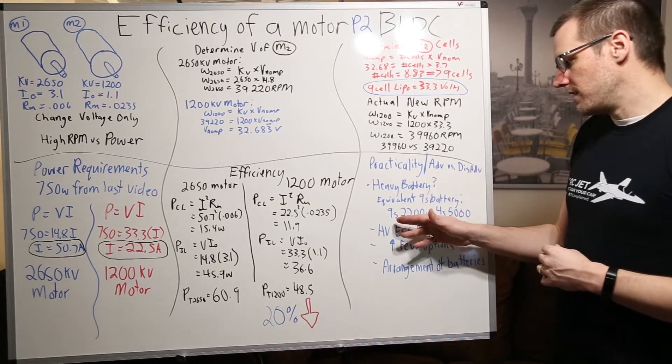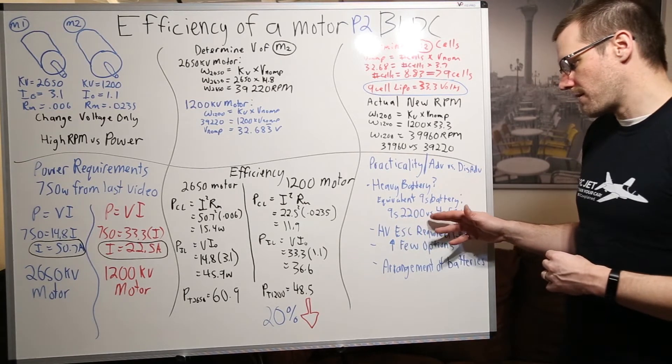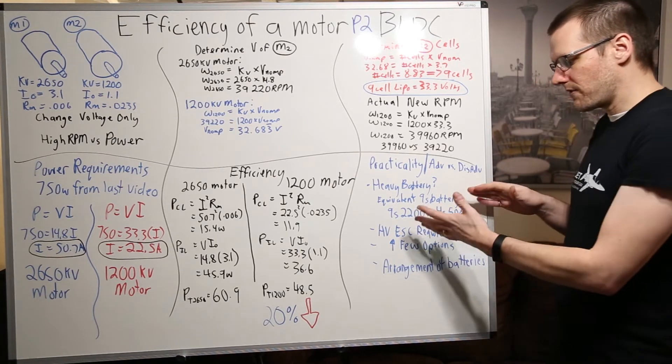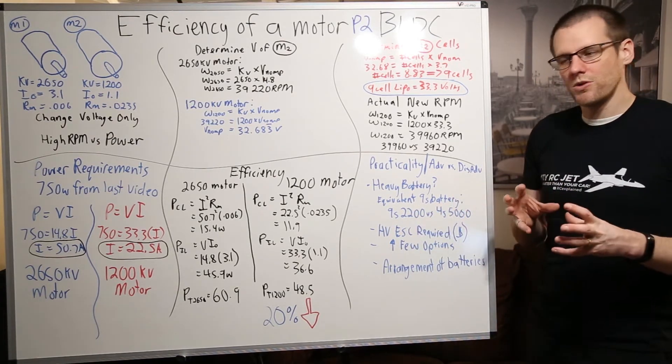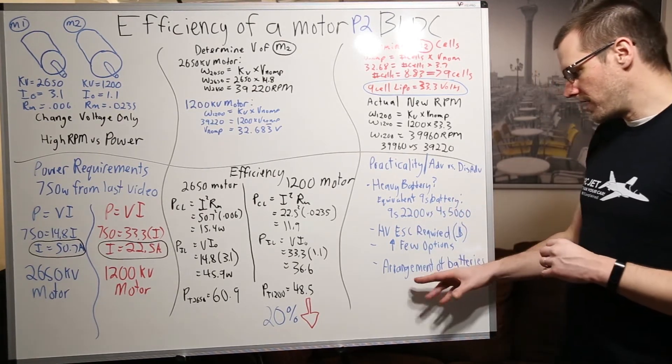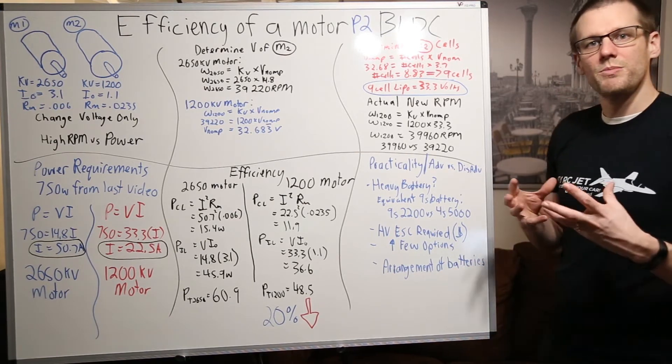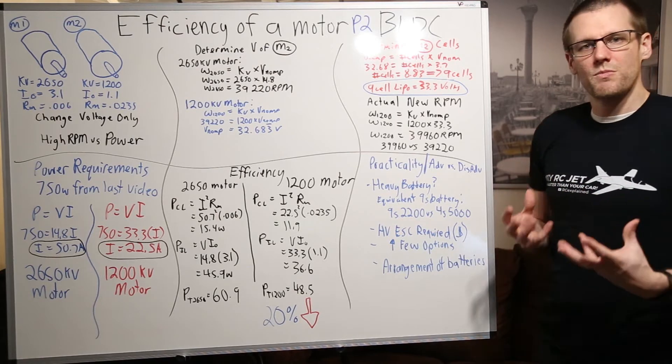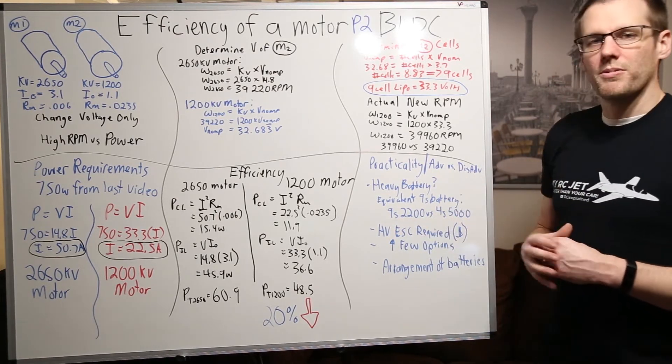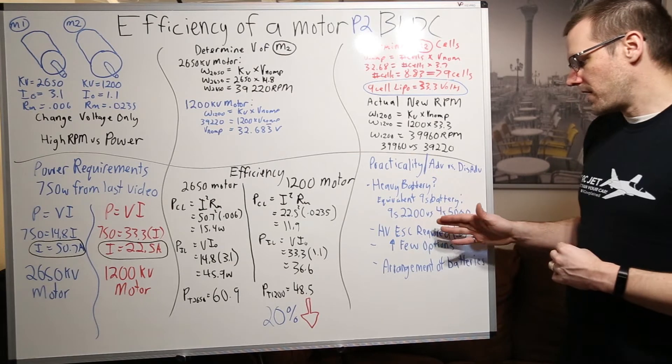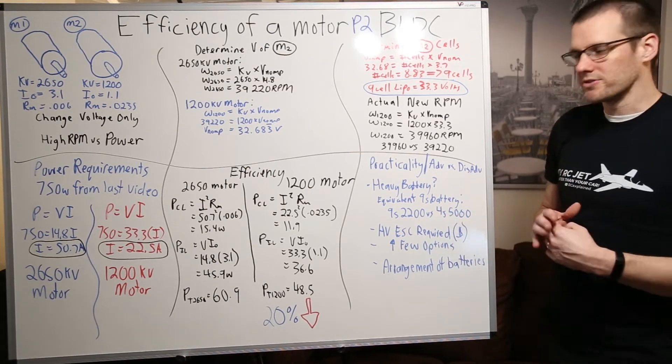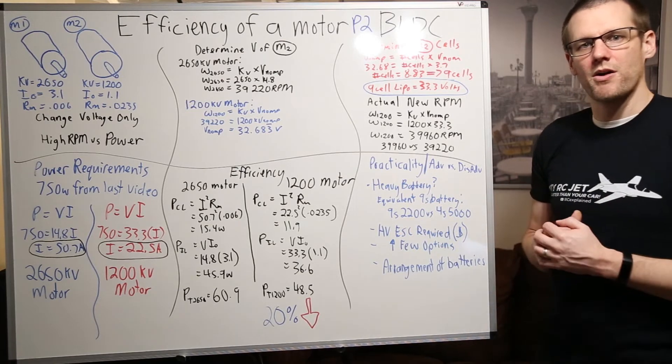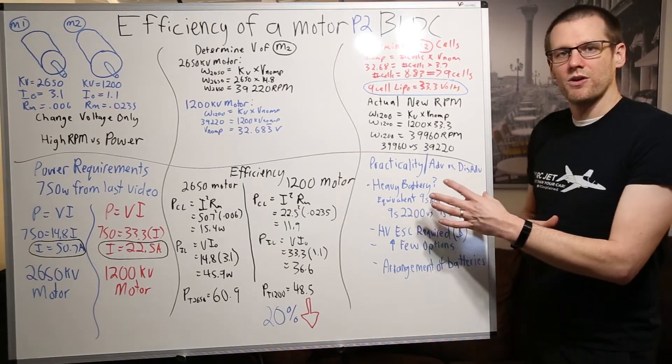If you do the math you get a 9s 2200 milliamp hour versus a 4s 5000 milliamp hour battery pack. So you can see the big difference there. Now that's kind of like an awkward sort of setup there. The arrangement of batteries is a little bit different than we would be used to. A 2200 is very small especially for a radio control car that can dump a lot of power and this would be comparable to a 4s 5000. These two battery packs can actually output the exact same amount of power assuming that they have both the same C rating.